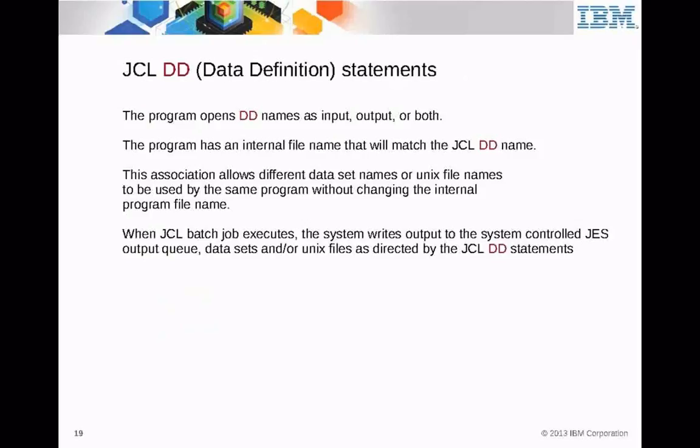The DD statement — data definition — is opened by the program as input, output, or both for updating. The program has the internal file name which must match the JCL DD name, and then the association is done.